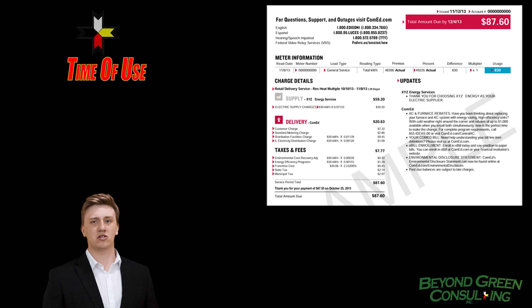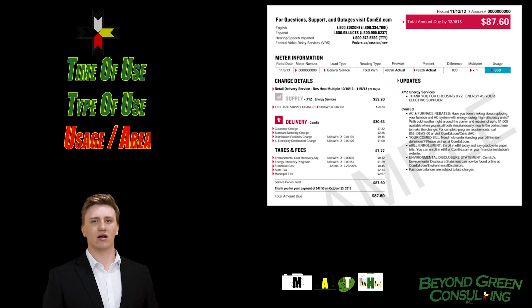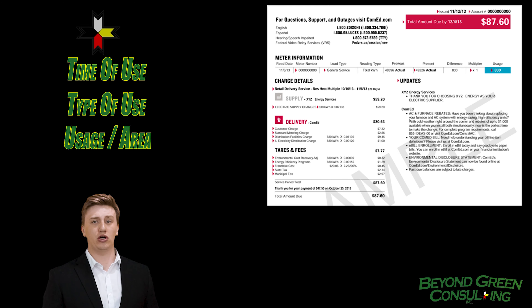The three ways are: by time of use, by type of use, and usage per floor area. Each measurement can give you an indication of how you are using energy and show you opportunities to improve.